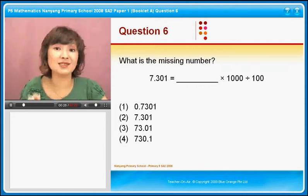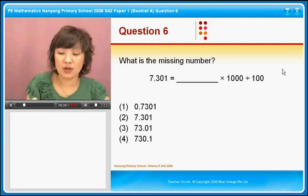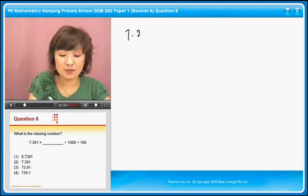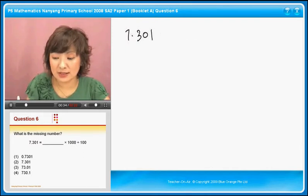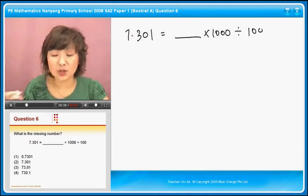So please be very careful because this is something that you have to score, right? So 7.301 is equal to blank times 1,000 divided by 100. So what do you work on first?